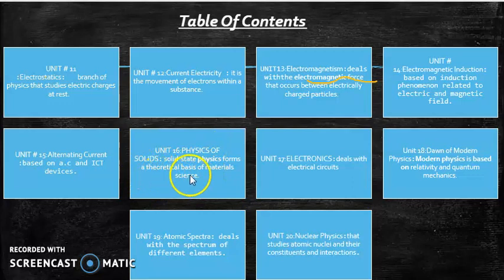In unit number 17, electronics deals with electrical circuits and how current is formed through electrical circuits. In unit number 18, dawn of modern physics, which is based on the theory of relativity and quantum mechanics. We also learn about the difference between classical and modern physics. The second last chapter, atomic spectra, deals with the spectrum of different elements. And in chapter number 20, nuclear physics, we study about atomic nuclei, their constituents and their interactions.